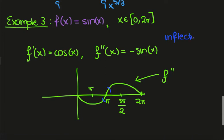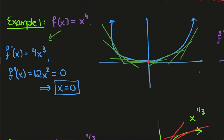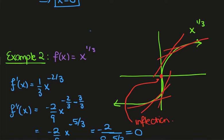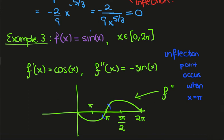An inflection point occurs when x equals π. To sum up: the condition for an inflection point is not that the second derivative equals 0 — it's that the second derivative changes sign about that point. We looked at x⁴, which has the second derivative equaling 0 but not changing sign, so there's no inflection point. For x^(1/3), an inflection point occurs and the second derivative does change sign, but the equation has no solution. In the sin(x) example, the second derivative equals 0 at π, and we confirm with the graph that it changes sign.